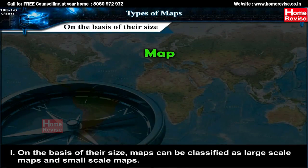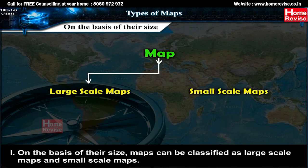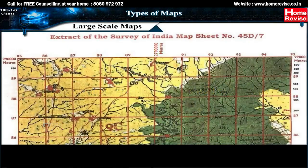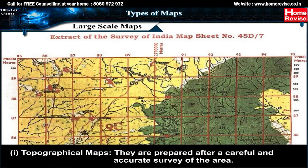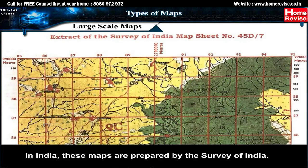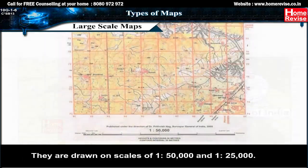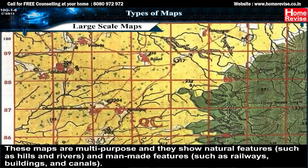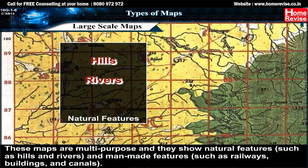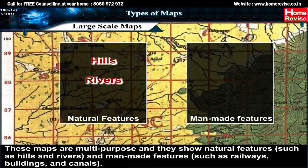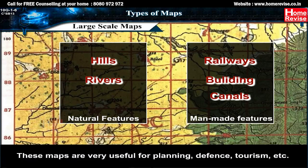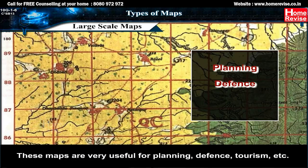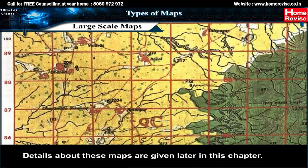Types of maps: on the basis of their size, maps can be classified as large scale maps and small scale maps. Large scale maps — first, topographical maps. They are prepared after a careful and accurate survey of the area. In India these maps are prepared by the Survey of India. They are drawn on scales of 1:50,000 and 1:25,000. These maps are multi-purpose and show natural features such as hills and rivers, and man-made features such as railways, buildings and canals. They are very useful for planning, defense, tourism, etc.